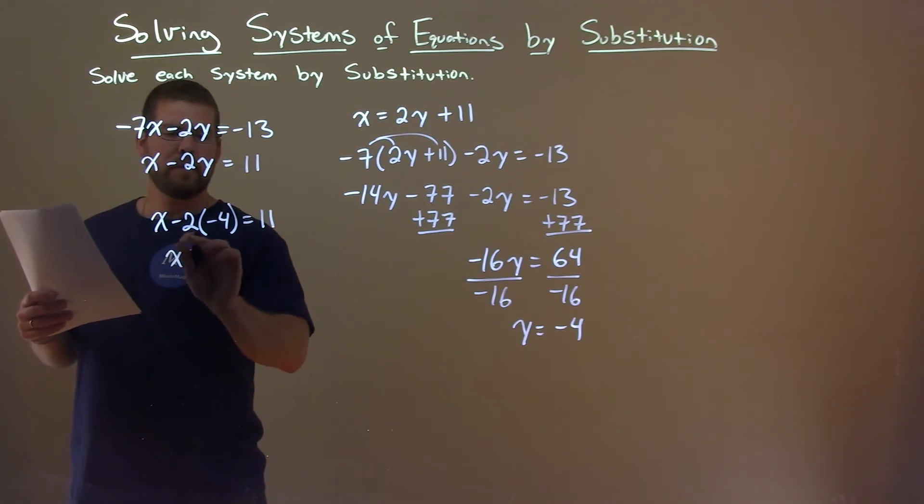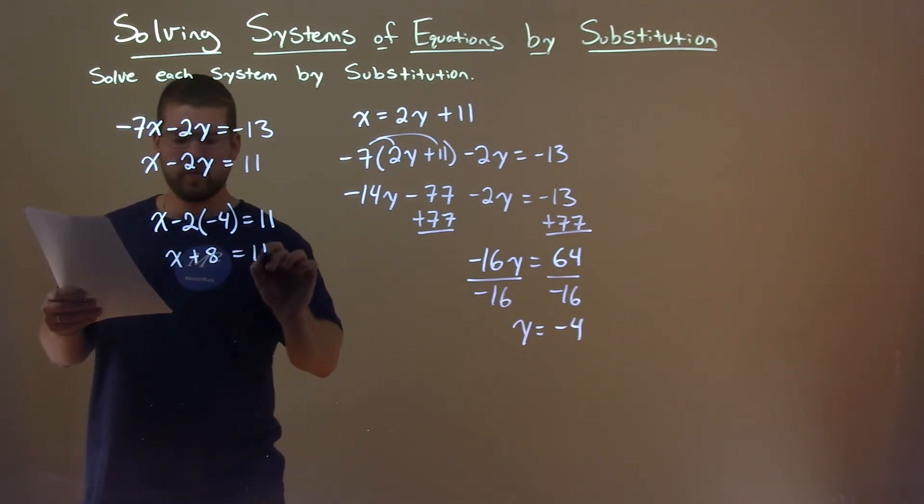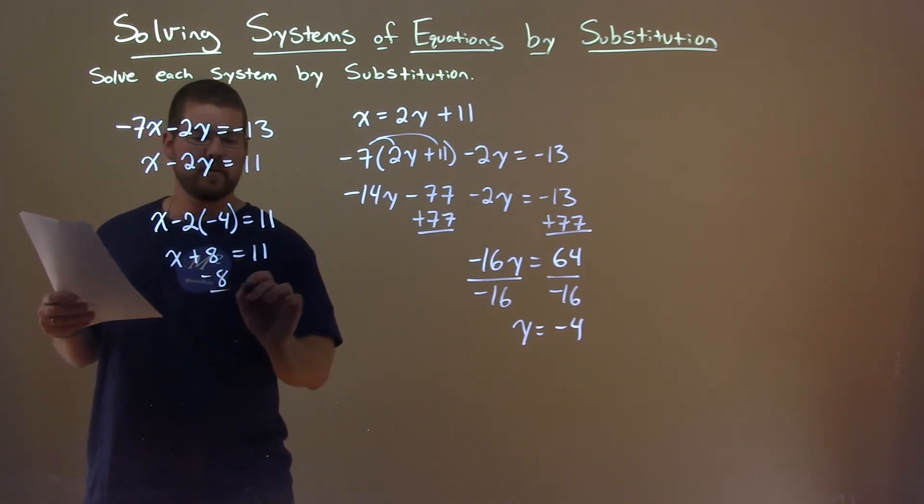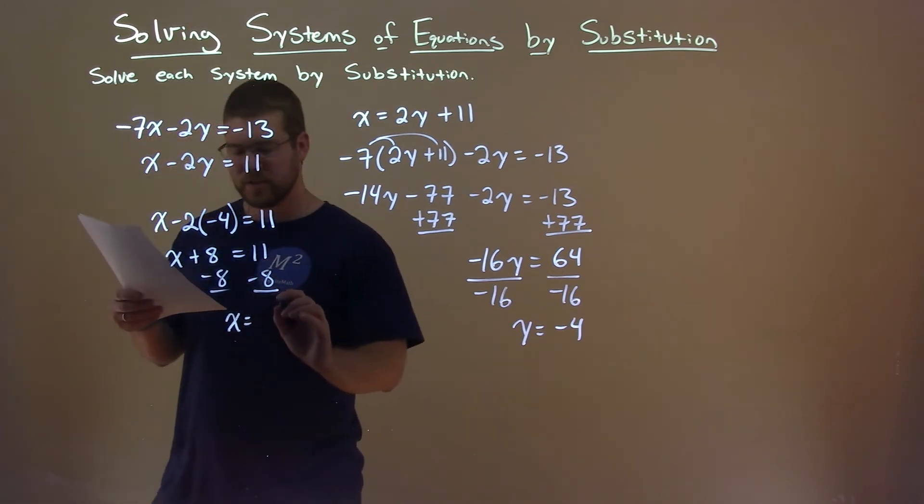Well, x minus 2 times the minus 4 is a positive 8, equals 11 here. And then subtract 8 from both sides, and x equals 11 minus 8, which is 3.